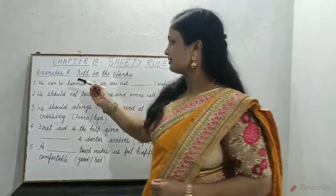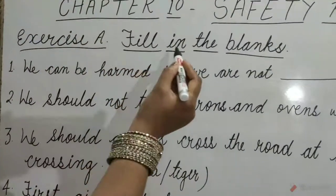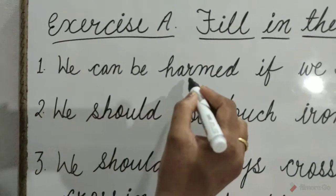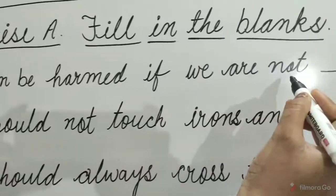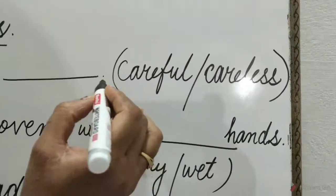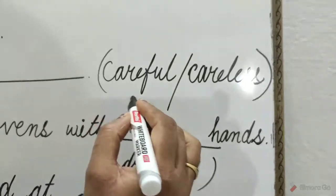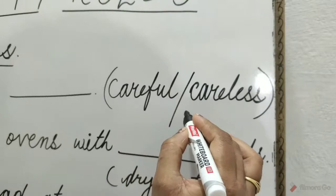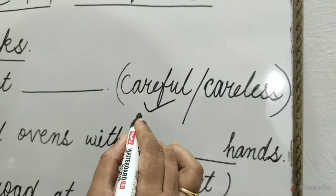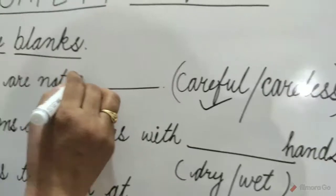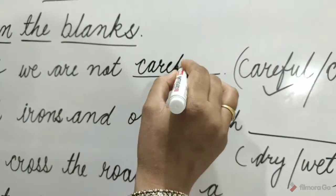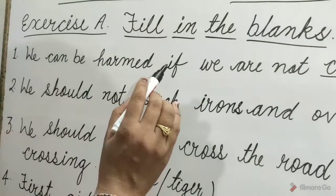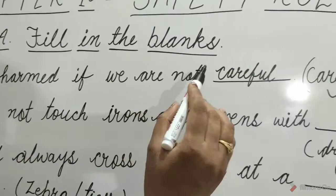First exercise is fill in the blanks. Question 1: We can be harmed if we are not blank. The options are careful, oblique, careless. The correct option is careful. So write here: careful. We can be harmed if we are not careful.